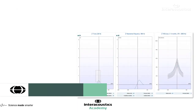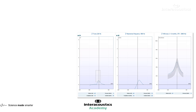Looking at the tympanograms page: on the left hand side you can see that noise on the 226 Hz tympanogram — it is a little bit wobbly and rough. But the wideband average tympanogram averages that out, giving quite a clean sweep on the right hand side, because multiple frequencies are being looked at simultaneously and that produces more of an average.